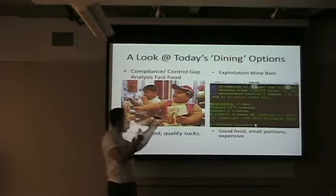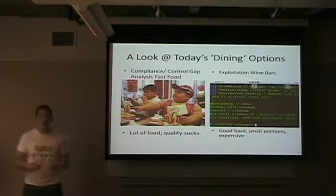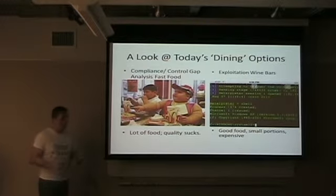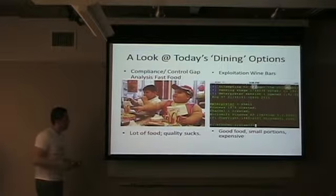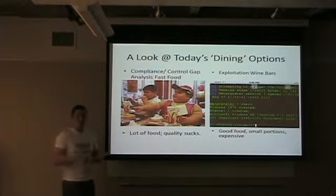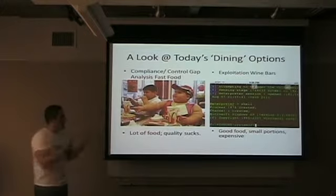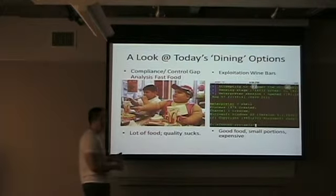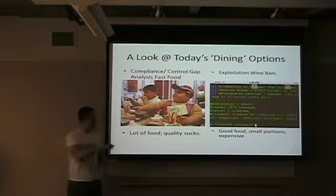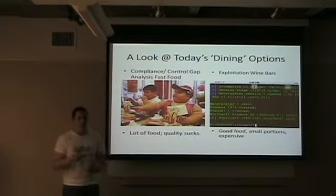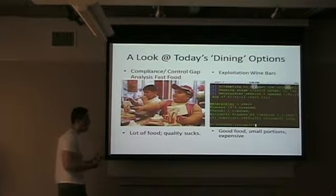Then we have what I call the exploitation wine bars. Like a wine bar, you get good quality food — the pen testing gives you good details — but it's expensive, it might take more time, it's more of an experience. Dynamic analysis and pen testing aren't old school and to be discarded; there are multiple different ways to threat model an application: asset-centric, software-centric, and security-centric.